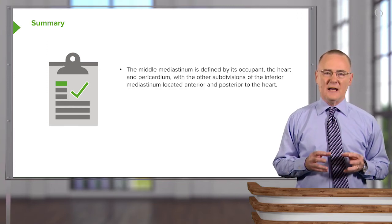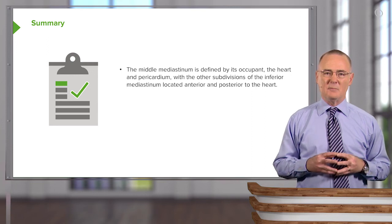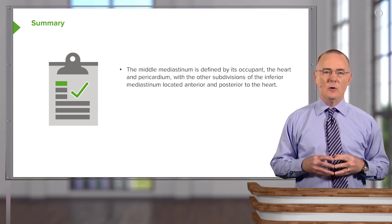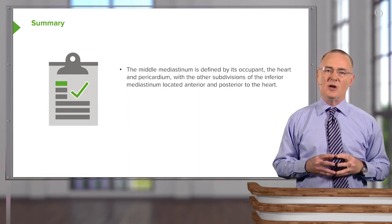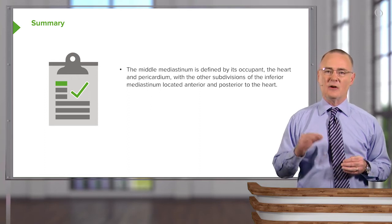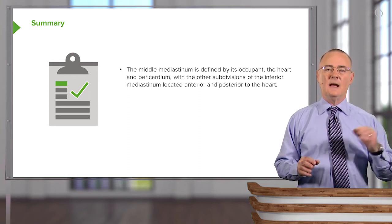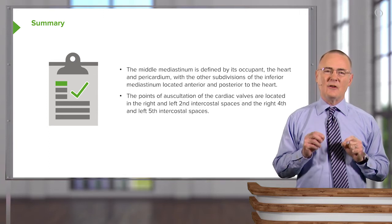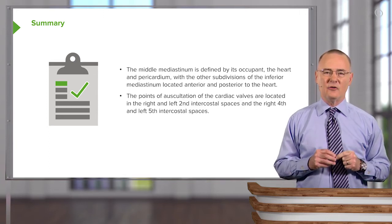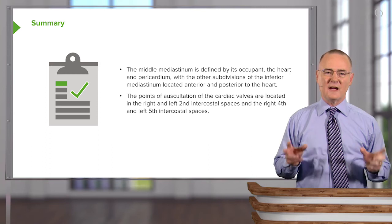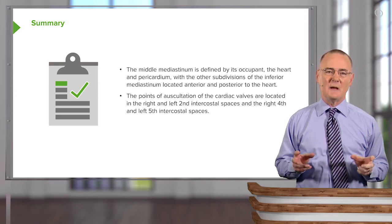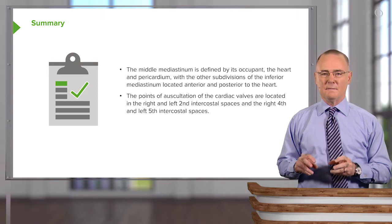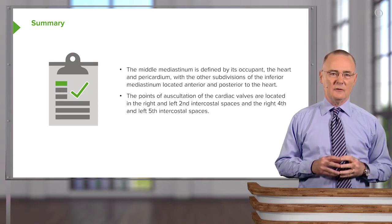The middle mediastinum is best defined by its major occupant — the heart and pericardium — with the other subdivisions of the inferior mediastinum located anterior to the heart and posterior to the heart. The points of auscultation of the cardiac valves are located in the right and left second intercostal spaces and the right fourth and left fifth intercostal spaces.